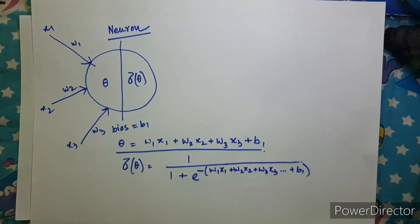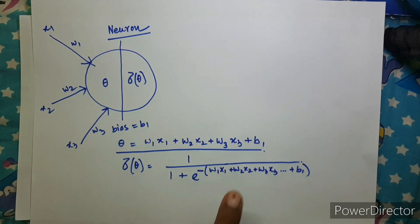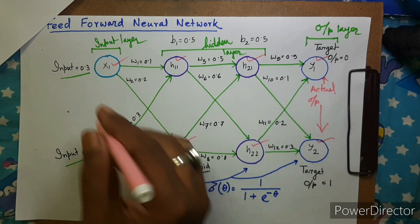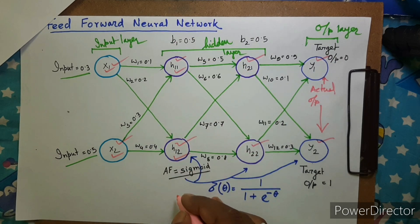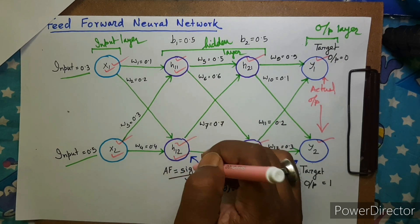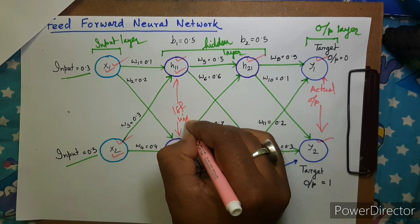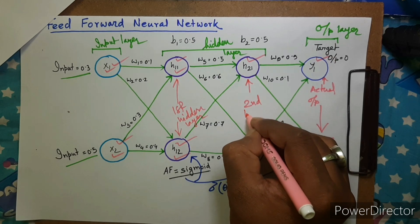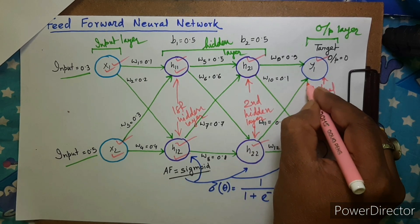This is the fundamental of how you calculate the input and output for each neuron. I have named each neuron with a particular name: x1, x2 are my input neurons; h11 is the hidden layer neuron for the first hidden layer. This is my first hidden layer and this is my second hidden layer, and as I mentioned this is my output layer.